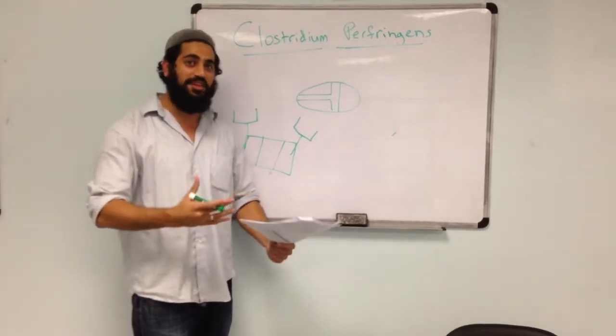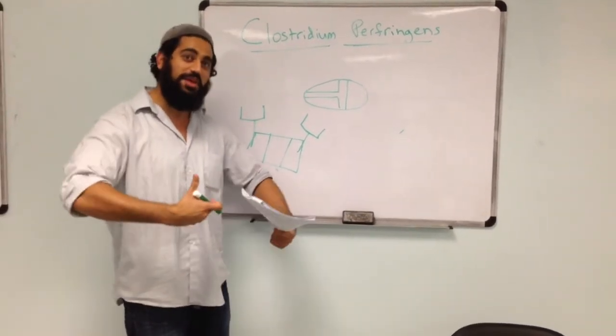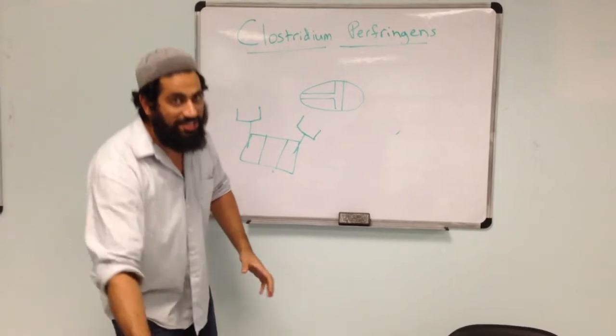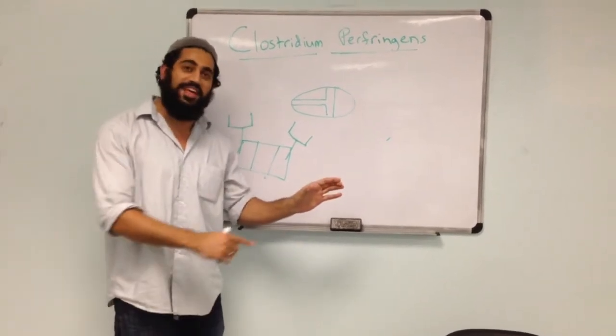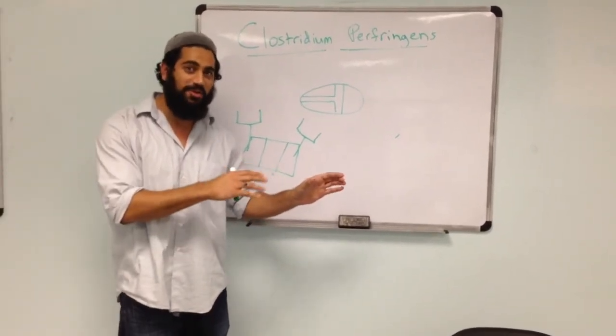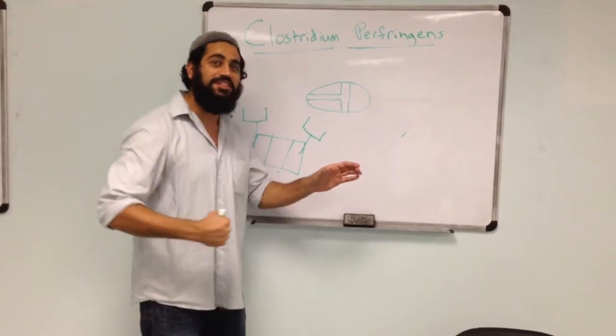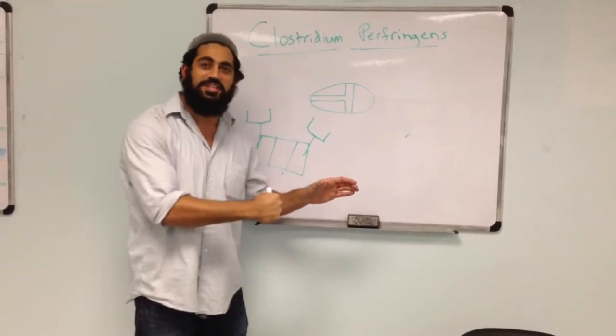When I think of the alpha toxin, I think of an alpha male. So I think of this big football player who's holding this little guy, and he's grabbing him by the neck, so he's cutting off his air, so it's anaerobic, and he's punching him in his lecithin and destroying his cell wall.